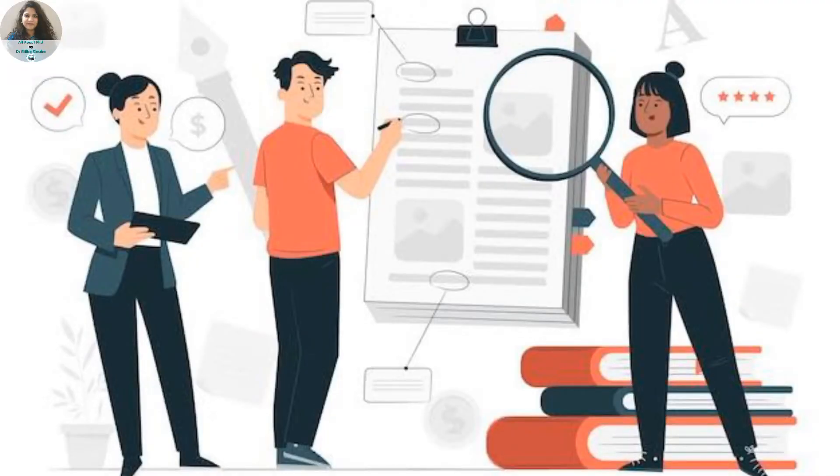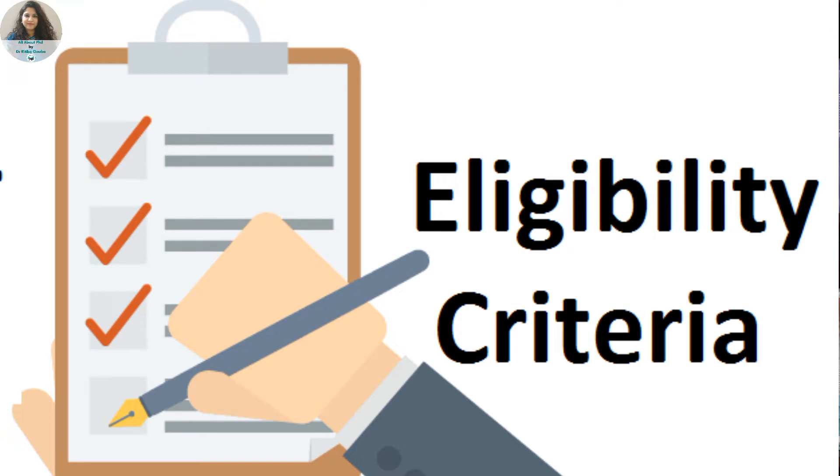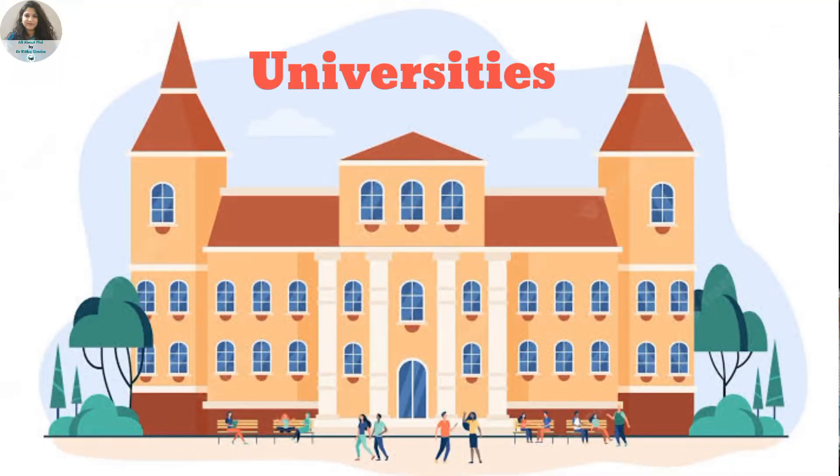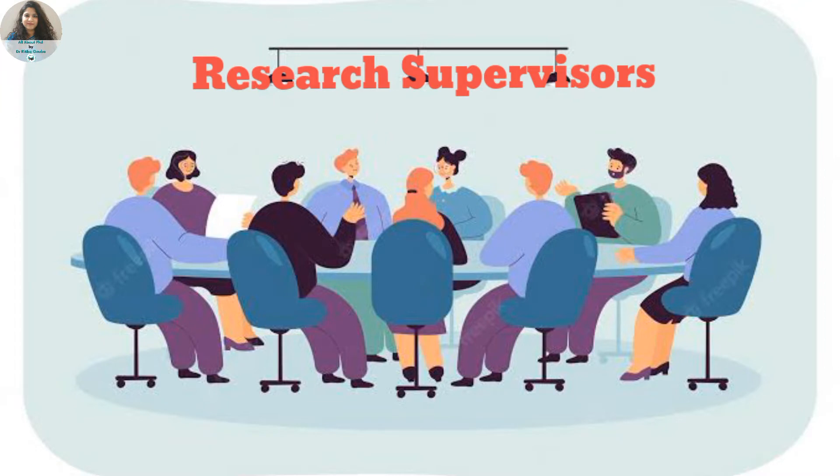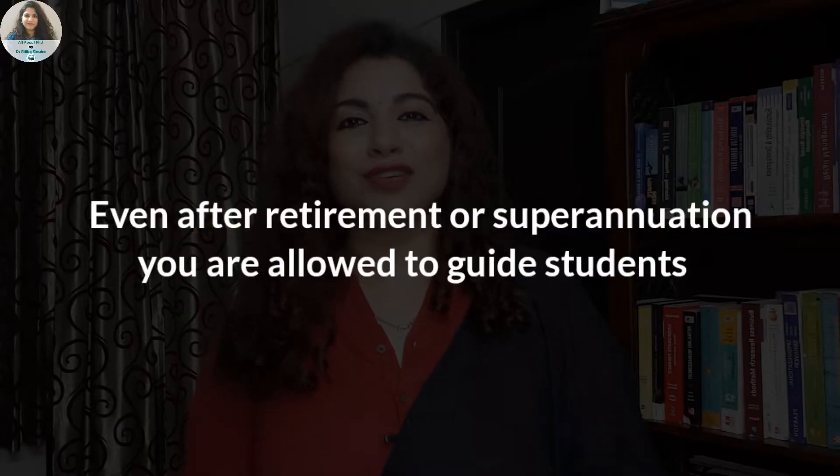Now let us discuss till what age a faculty can continue to be a research supervisor. As long as a faculty is fulfilling the eligibility requirements given by UGC and as specified by the university — remember, the eligibility criteria discussed are just minimum criteria and universities can make their norms more stringent — throughout your tenure as a professor or associate professor, you can continue to guide students. The good news is that even after retirement, even after superannuation, you are allowed to guide students.